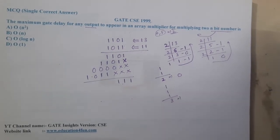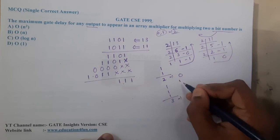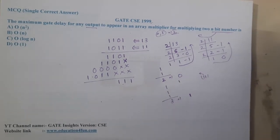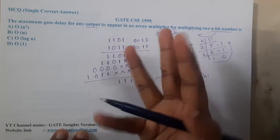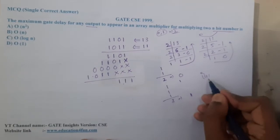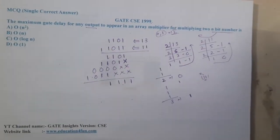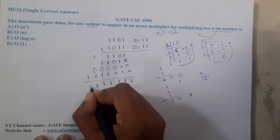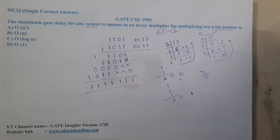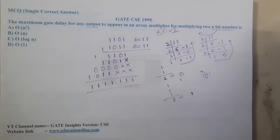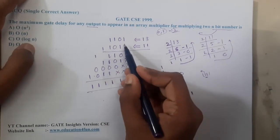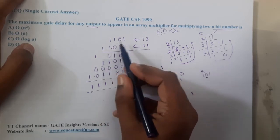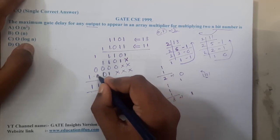If you add 1+1+1 the result is 3; in binary, 3 is represented as 11, so you write 1 here and carry 1 to the next position. Now, I made a silly mistake earlier — I wrote 1101 for the partial products incorrectly. The correct partial products are: 1×1011 = 1011, 1×1011 shifted = 10110, 0×1011 = 00000, 1×1011 shifted = 1011000.